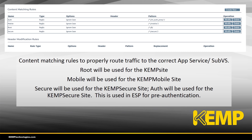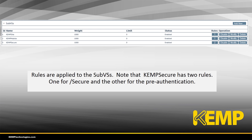Here are the content matching rules that the Loadmaster uses to route traffic to the appropriate app service through the sub-virtual services. 'Route' will be used for the Kemp site, 'mobile' will be used for the Kemp mobile site, and 'secure' will be used for the Kemp secure site. Notice that we also have ESP configured to provide pre-authentication for this site. Those rules are applied to the sub-virtual services — note that Kemp secure has two rules: one for the secure site and the other to ensure pre-authentication.